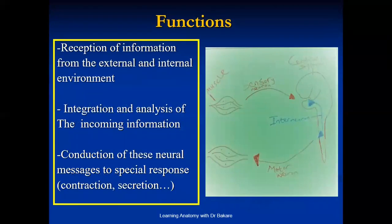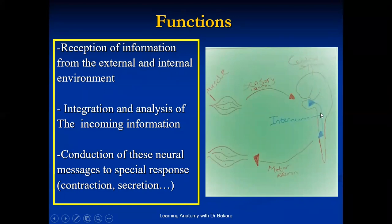The functions of the neurons. Basically, neurons are involved in the reception of neural information from the external or internal environment. They receive information from the target organ and take it to the brain for analysis. When it gets to the brain and spinal cord, neurons embedded within it are responsible for integration and analysis of the received message. After interpretation, the generated impulses are also taken by neurons to the target organ. So what they do basically is to receive neural impulses, integrate or analyze them, and conduct the response back to the target organ.